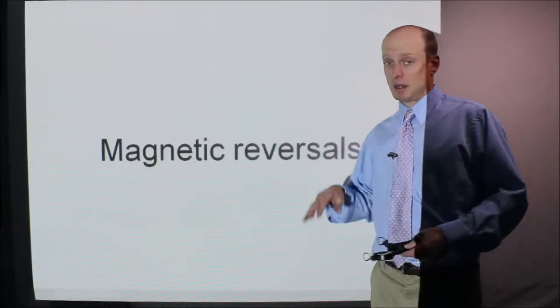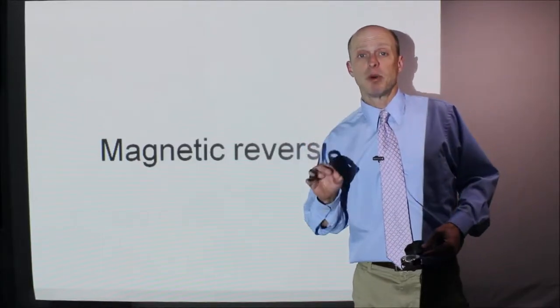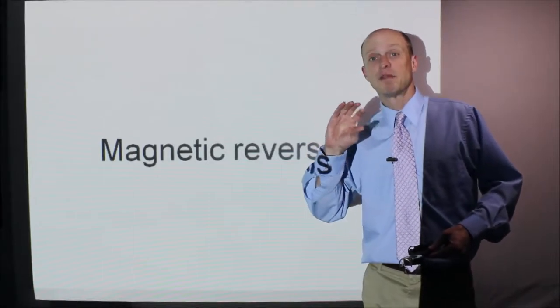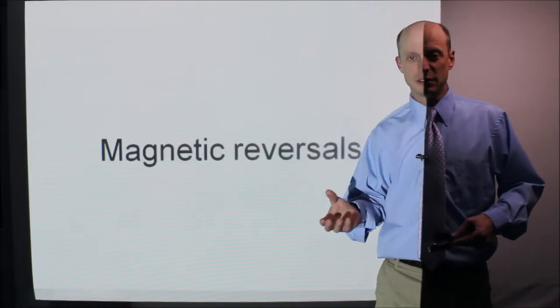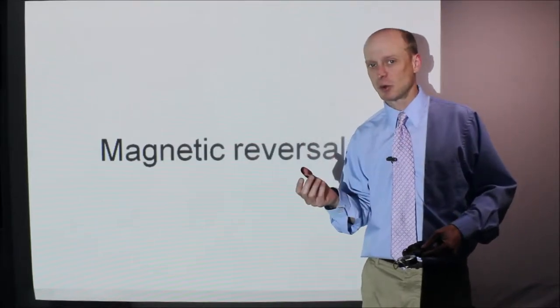The magnetic north pole of Earth at times will sort of flip-flop where the north becomes south and the south becomes north. Now, it takes thousands of years and it kind of happens randomly. We're not sure why.